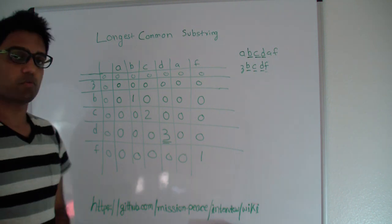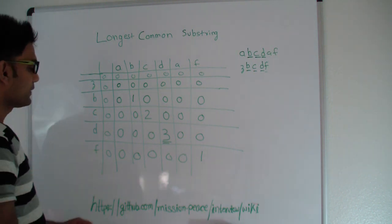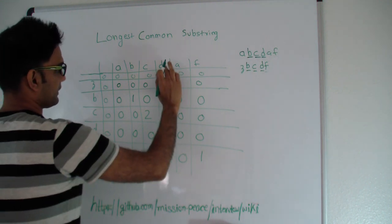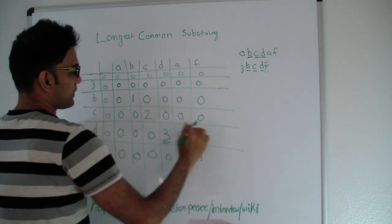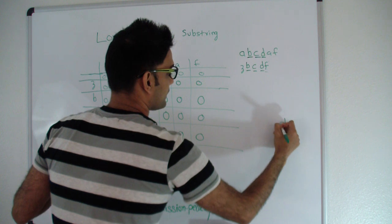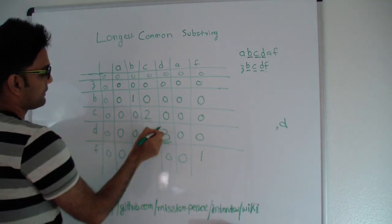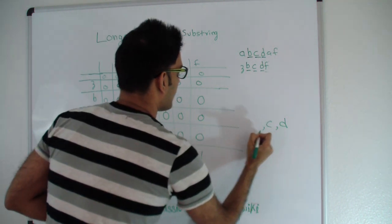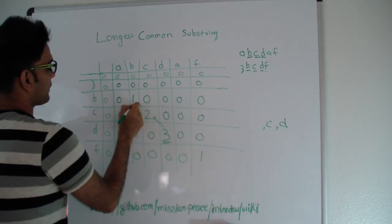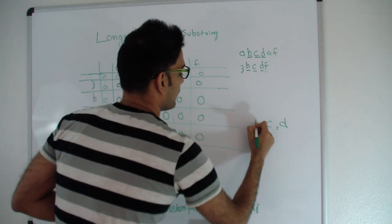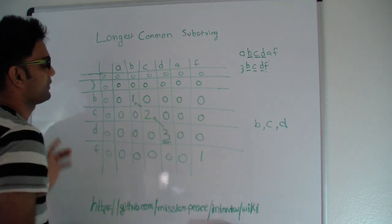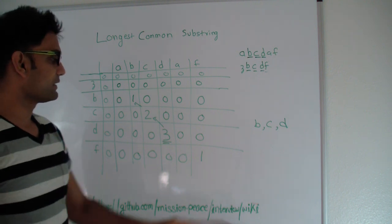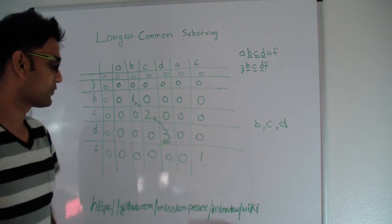If someone asks what that substring is, go to the biggest number — 3. That row and column is definitely the answer, so D is one of them. Then you keep going diagonally across: C and C is one of them. Keep going diagonally across and B and B is one of them. As soon as you hit 0, you know you're done. So our longest common substring is B, C, D and the length is 3.